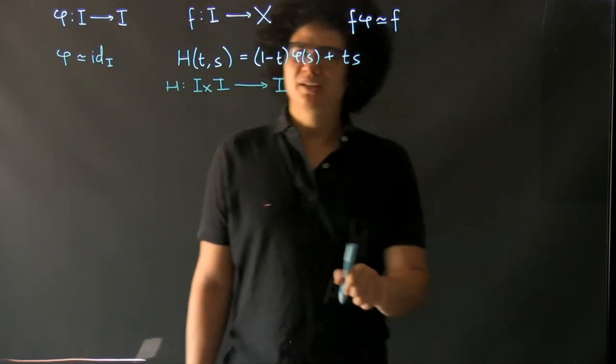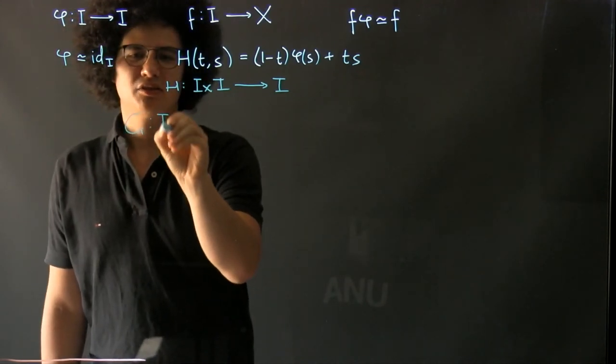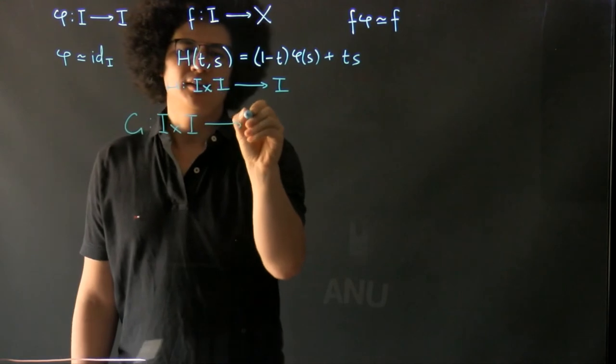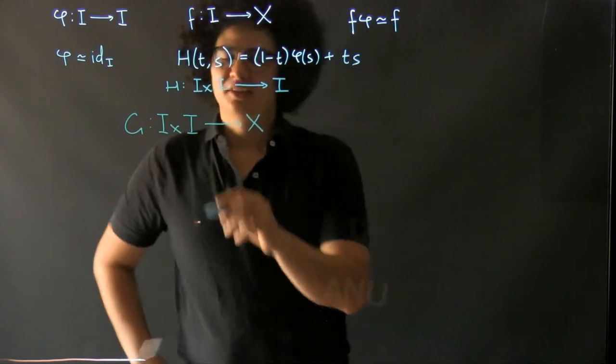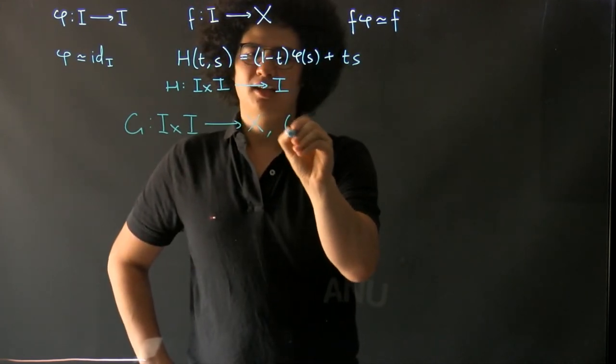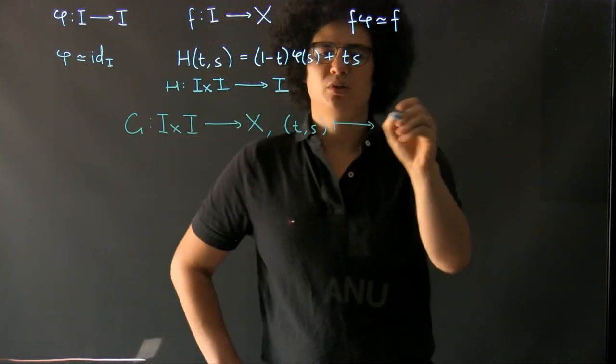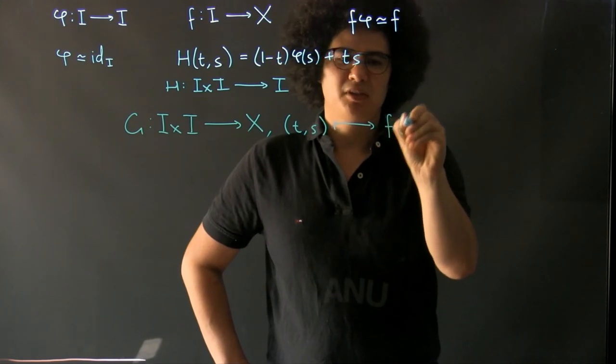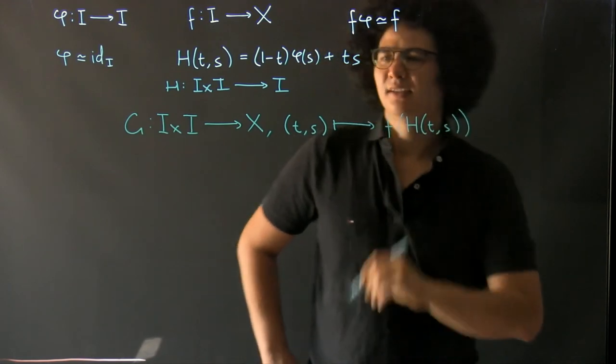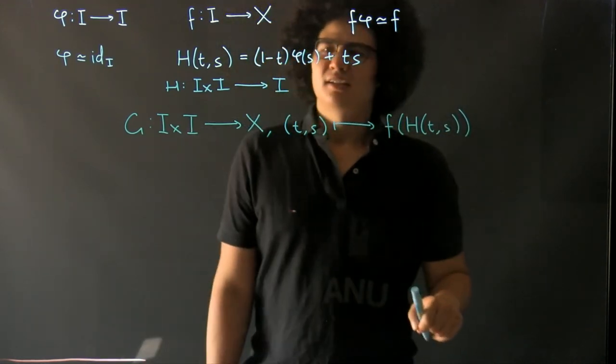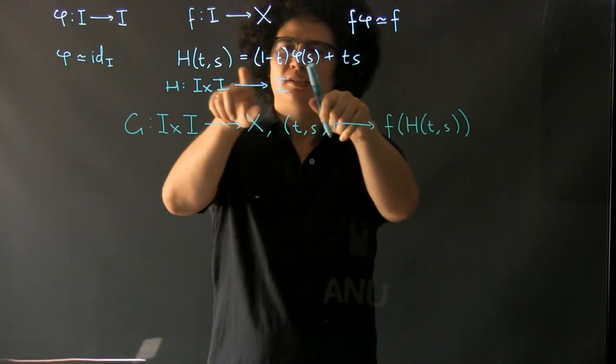And we build a homotopy here G from I cross I into X just by post composing this with f. So then this is going to take (t,s) and it's going to send it to f applied to H(t,s).